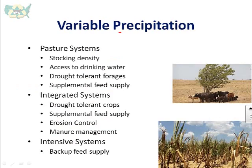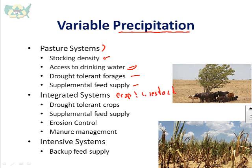Thinking about variable precipitation — both intensity and timing — pasture systems are probably most vulnerable. Looking at stocking density, making sure there's enough forage, access to water since many pasture systems use farm ponds that dry up in drought, drought-tolerant forages, and supplemental feed supplies. For integrated crop-and-livestock systems, consider drought-tolerant crops like corn varieties more tolerant to drought, supplemental feed supply, and erosion control during intensive rainfall events.